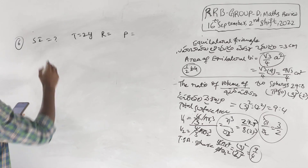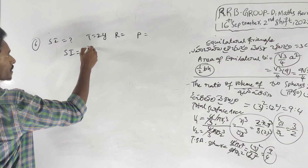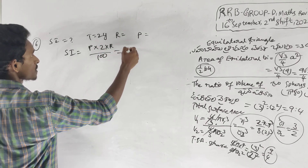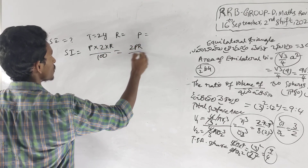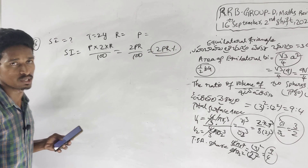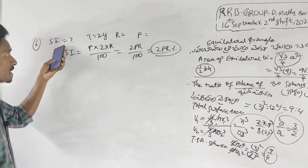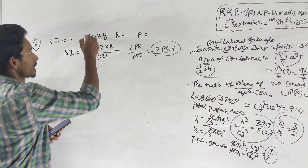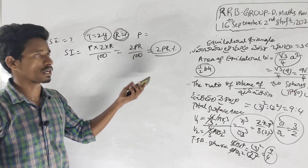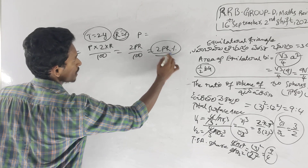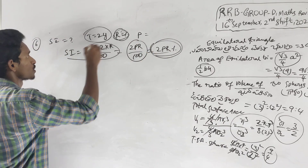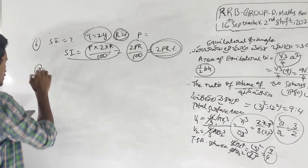If you have the option, PTR: P is principal, T is time, R means rate of interest. The formula is 2PR by 100, or 2PR percent. If you have 2 years and R percent rate of interest, in principle P, you use 2PR by 100.